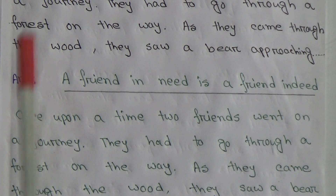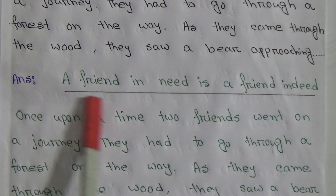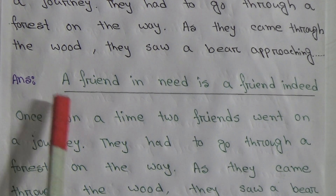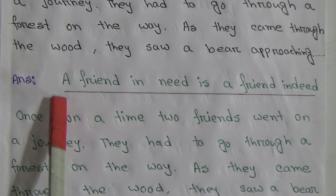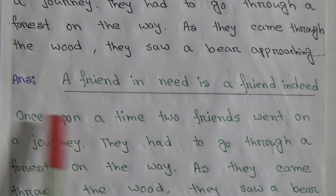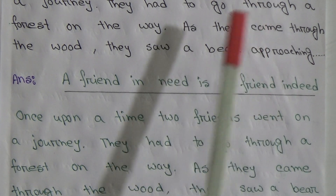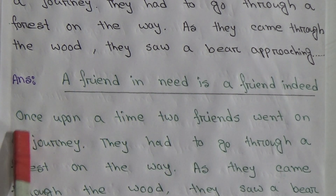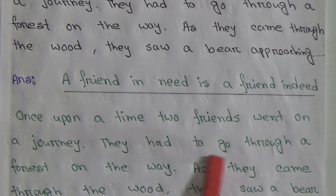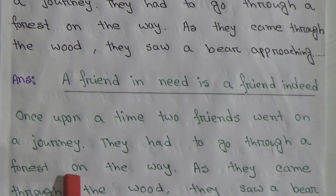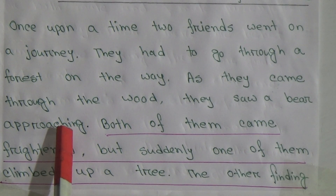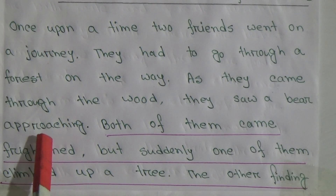Now you have to write a title about this incomplete story first — that is very important. Then you have to write and complete this story. The incomplete story begins: Once upon a time, two friends went on a journey. They had to go through a forest on the way. As they came through the wood, they saw a bear approaching.